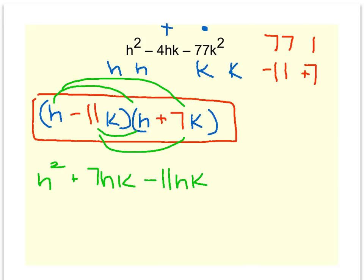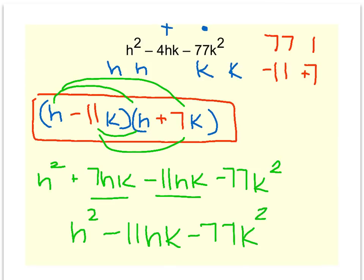And what's left? Negative 11k times 7k is a negative 77k squared. I have like terms here to combine, which will give me h squared minus 11hk minus 77k squared.